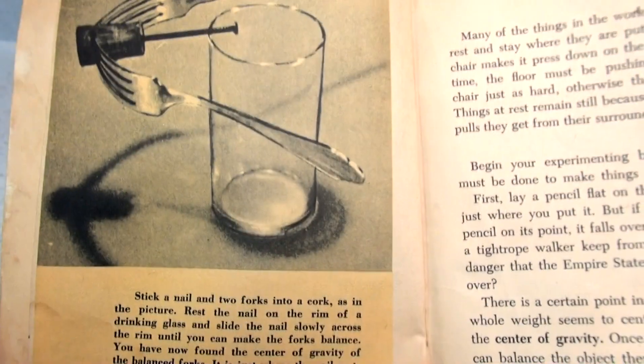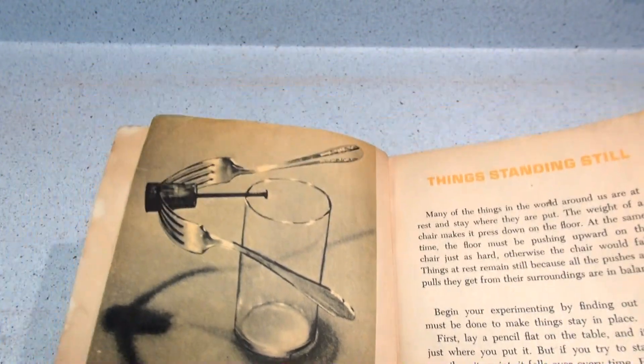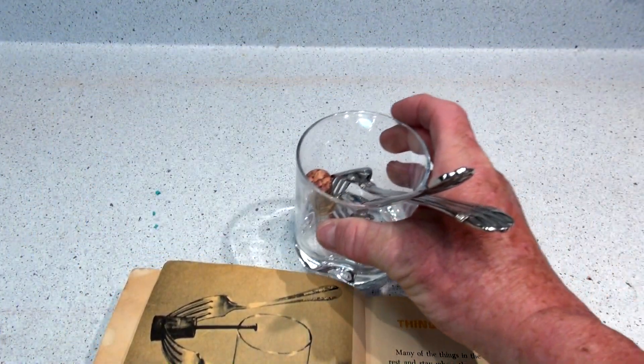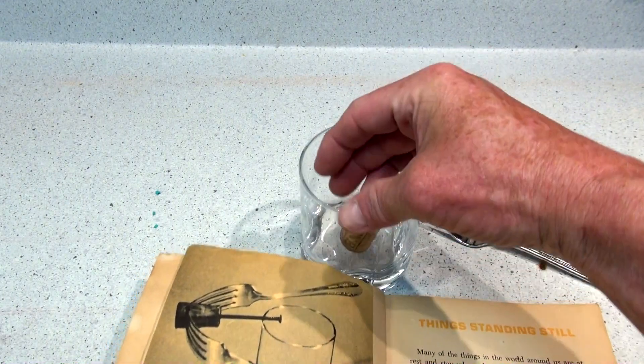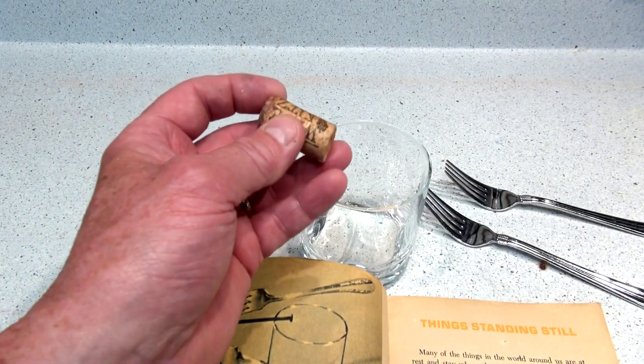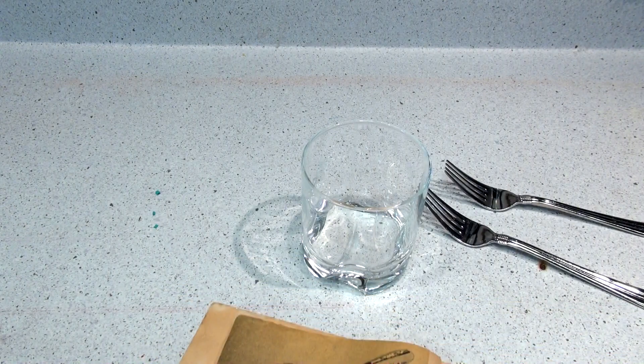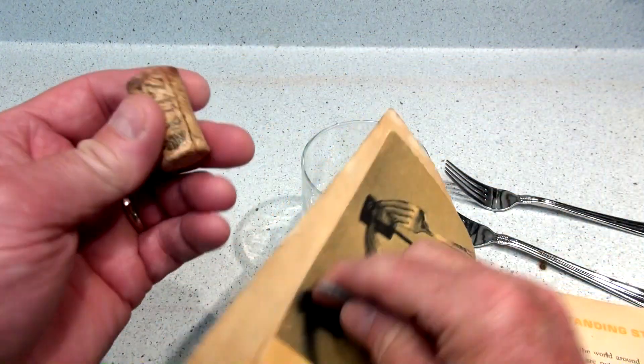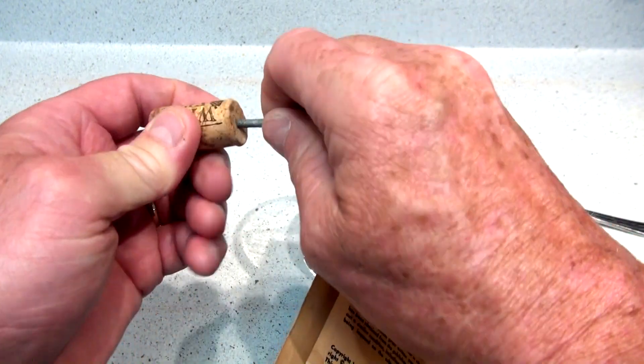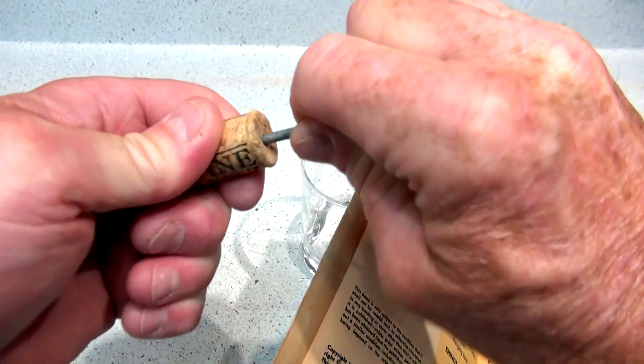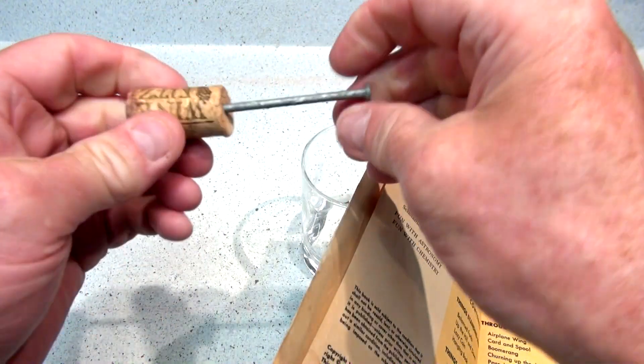Now you have found the center of gravity. It is just where the nail rests on the edge of the glass. Well, that's a good experiment. I'm gonna give that a try. I have a glass, two forks, a cork, and a nail. So I'm just gonna do what the picture says. Put the nail into the cork. Never done these experiments before on YouTube, so bear with me. Okay, that looks pretty good. It's in there pretty good.